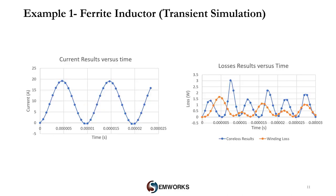A transient simulation is now performed to compute different electromagnetic quantities in the time domain. The excitation voltage is 10 volts at 100 kHz. On the left we can see a positive current circulating in the coil, always positive versus time. On the right side we can see the winding and core losses versus time, both oscillating. This covers static, harmonic, and transient analysis, giving a comprehensive understanding of the inductor's performance versus different conditions.